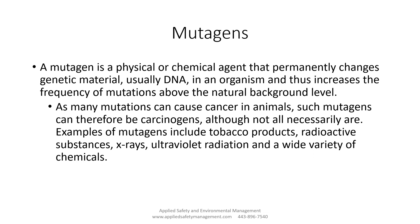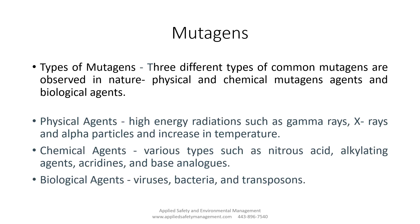When we think about some of the mutagens out there, we could think about tobacco products, radioactive substances, x-rays, UV radiation, and a whole bunch of chemicals. That's really what we're going to find on the SDS sheet where it's going to say it's a mutagen of a classification system. It will not always cause your DNA to mutate — like all things, they always have to say 'may' because it doesn't happen every single time. There are three different types of mutagens: physical agents, chemical agents, and biological agents.